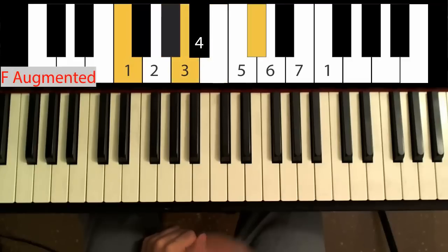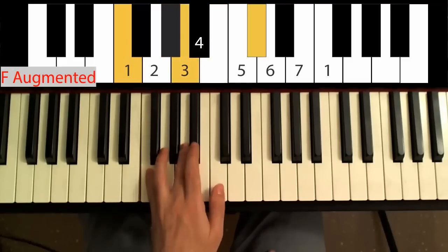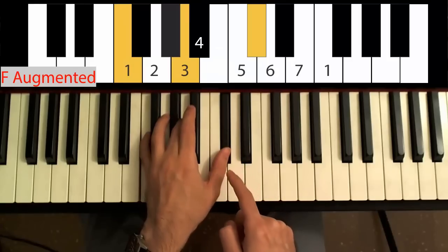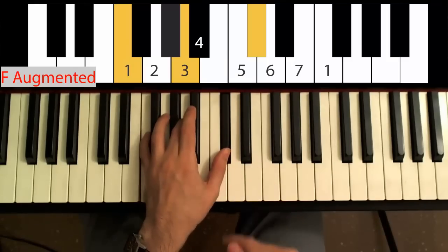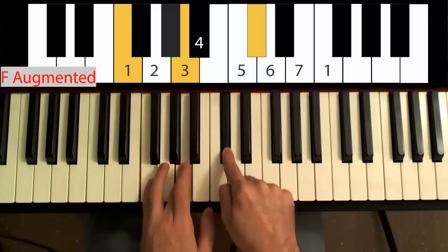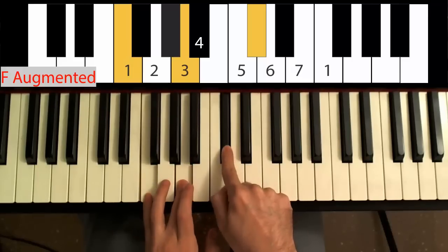Finally, to play the augmented chord, play the 1st, 3rd and raised 5th, also called sometimes the sharp 5th. And this is simply the note that is one semitone above the 5th of the scale. So this will be the F augmented chord.